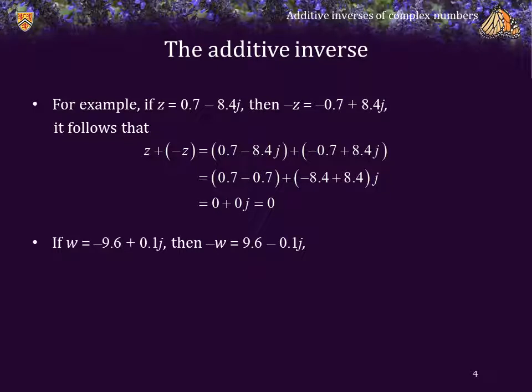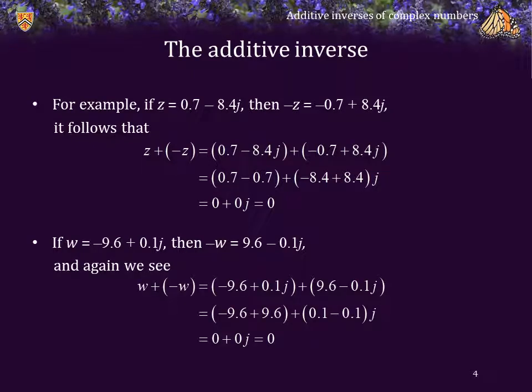Similarly, if w is equal to negative 9.6 plus 0.1 j, then the additive inverse of w is 9.6 minus 0.1 j. And again, we see adding w plus its additive inverse does indeed equal zero.